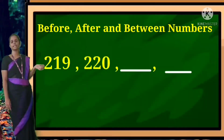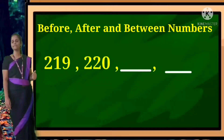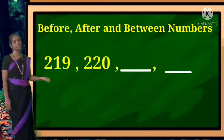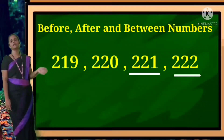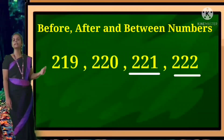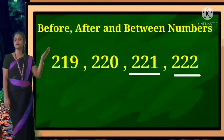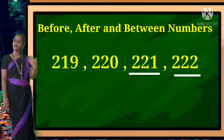Next example: 219, 220, dash, dash. After 220 comes 221. After 221 comes 222. These are the examples for after number.